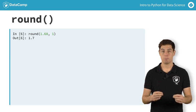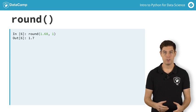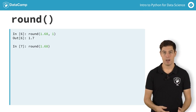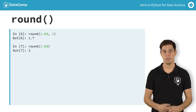But there's more. It's perfectly possible to call the round function with only one input, like this. This time, Python figured out that you didn't specify the second input, and automatically chooses to round the number to the closest integer.